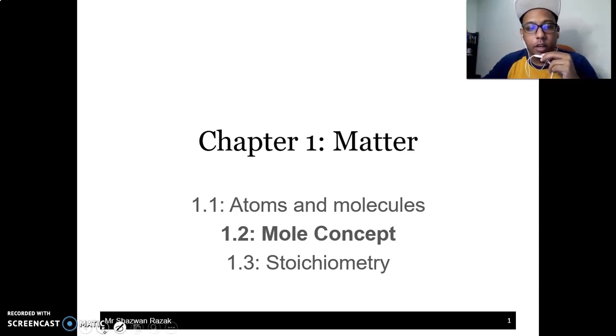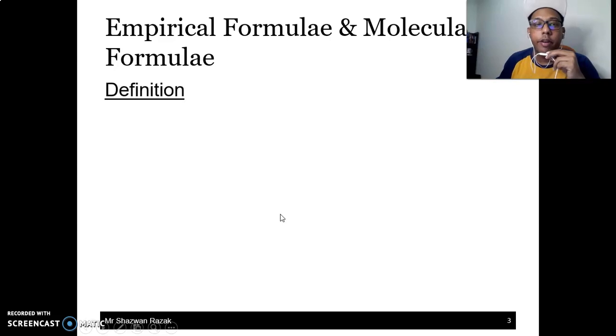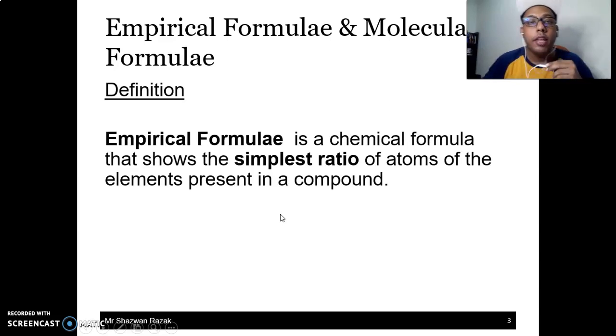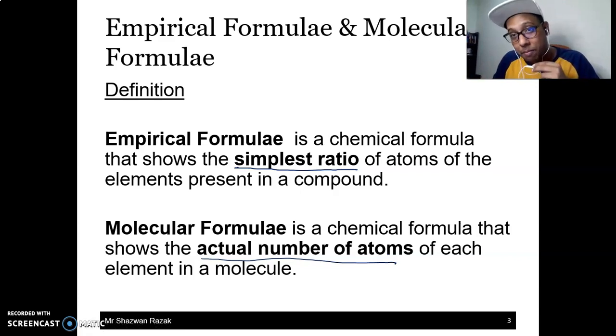And in this lecture, what we're going to do is we're going to discuss about the empirical formula. So what is empirical formula? Empirical formula is actually a chemical formula that shows the simplest ratio - the keyword here is simplest ratio of atoms of the element present in the compound. What about molecular formula? Molecular formula shows the actual number of atoms. Empirical dia tunjuk yang paling simple, while molecular formula dia tunjuk yang actual punya.